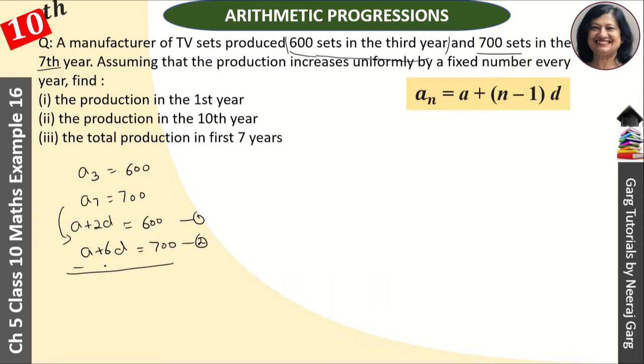We will subtract both equations. We get -4d = -100. The negatives cancel, and the value of d is 25.